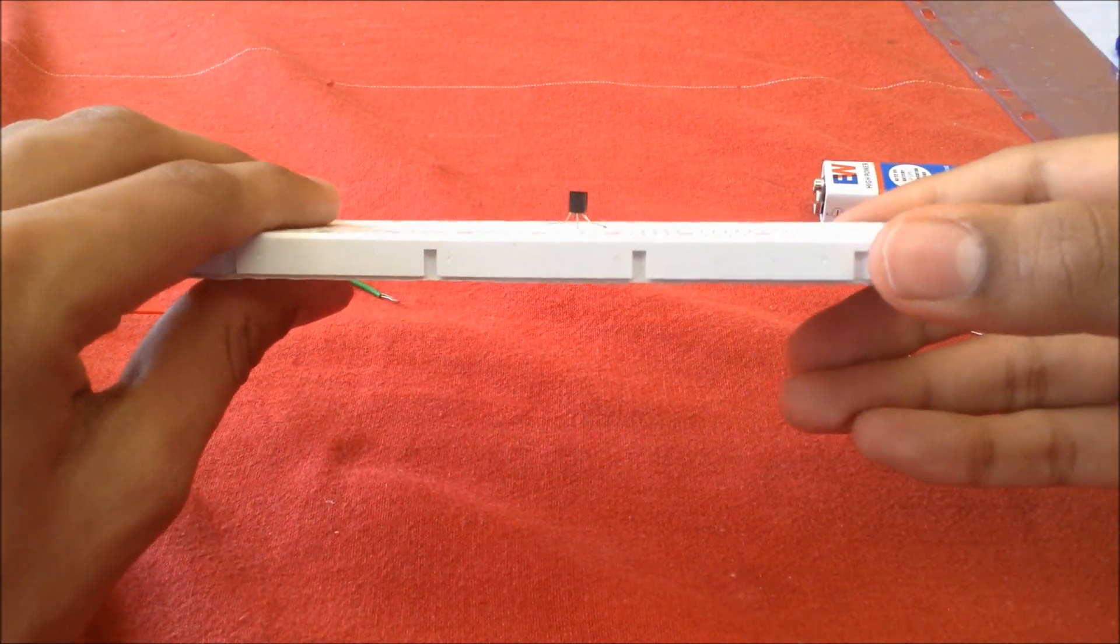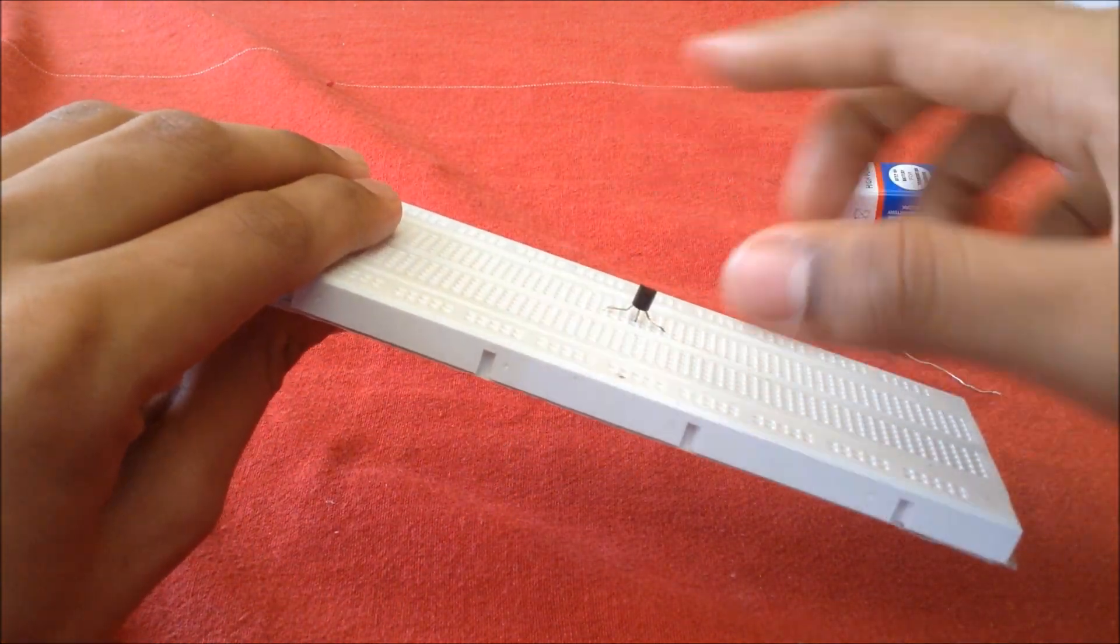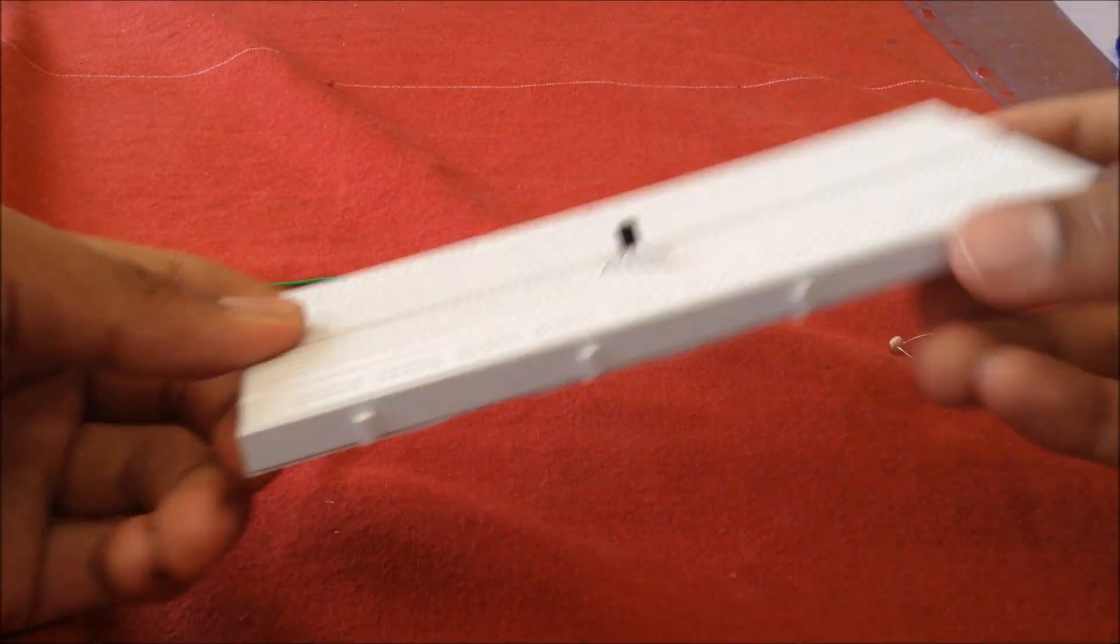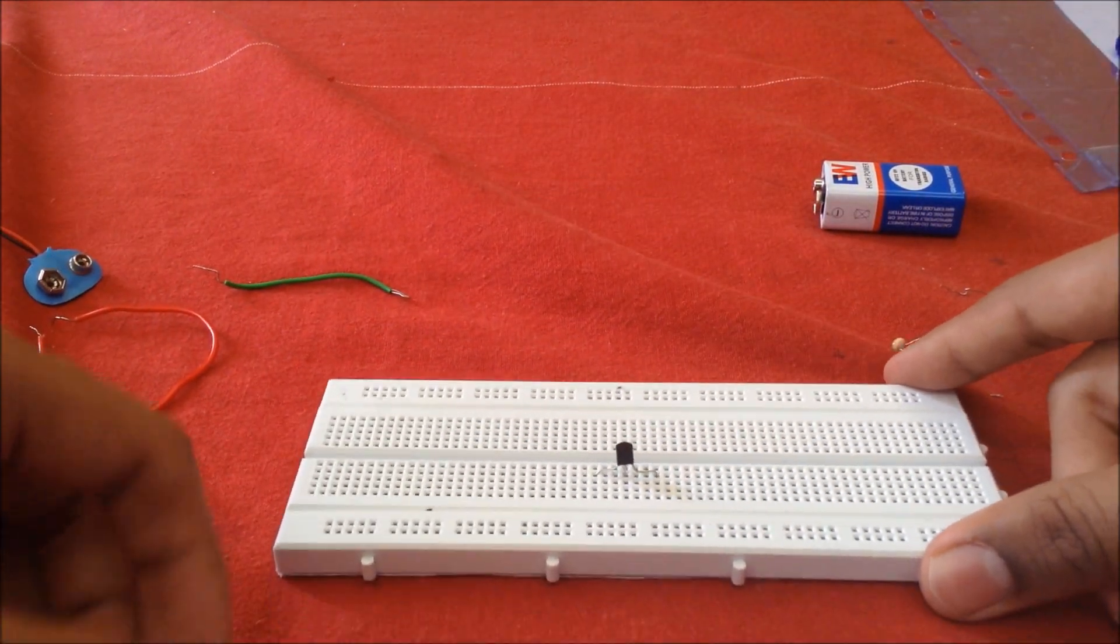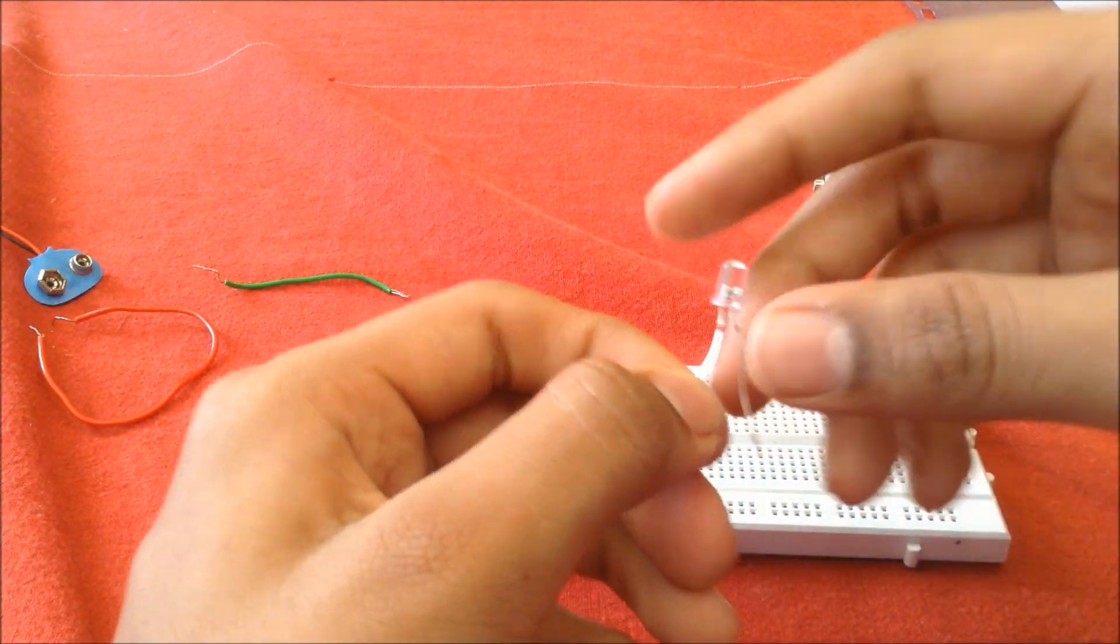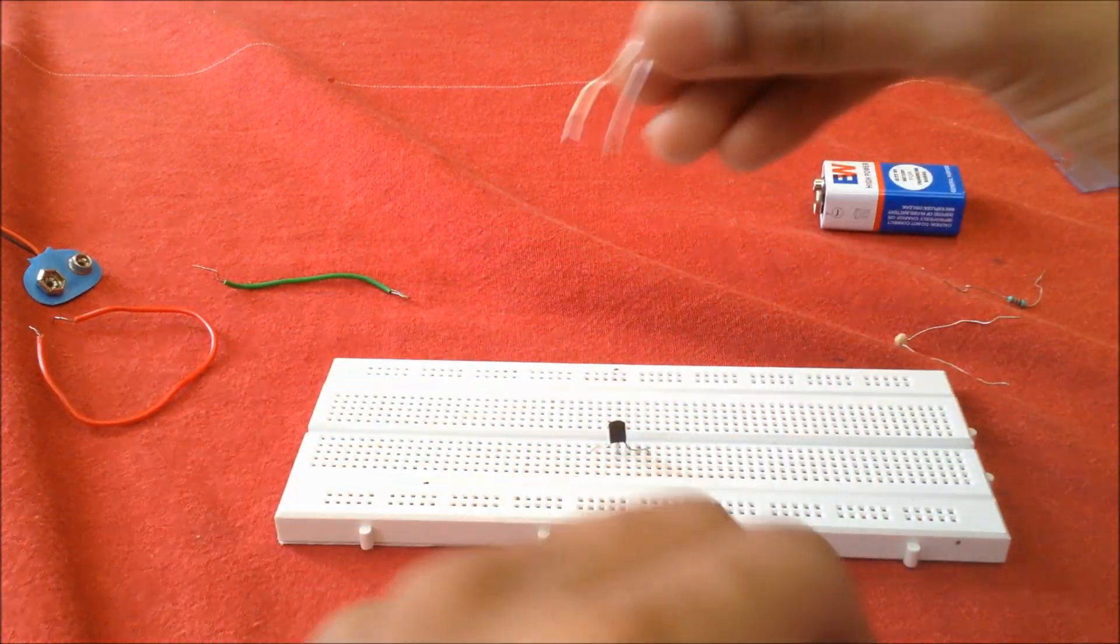First, we attach the LED that will tell us the intensity of darkness. All LEDs have two legs: the cathode and the anode.